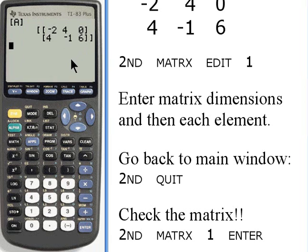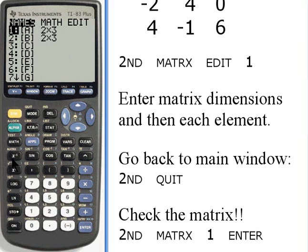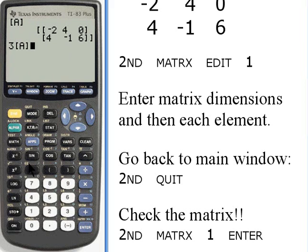After this, if you've entered the matrix correctly, then you can do some basic operations on it. Let's say, for instance, we want to multiply this matrix by 3. I'll press 3, and then 2nd and matrix, and I'll press 1. So now this says 3 times matrix A. When I press enter, what has happened is it's multiplied each of the elements in matrix A by 3.